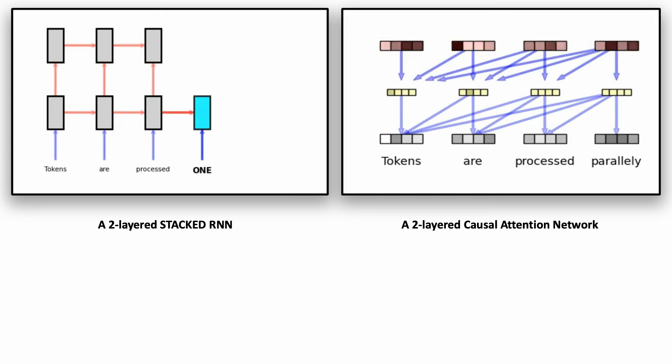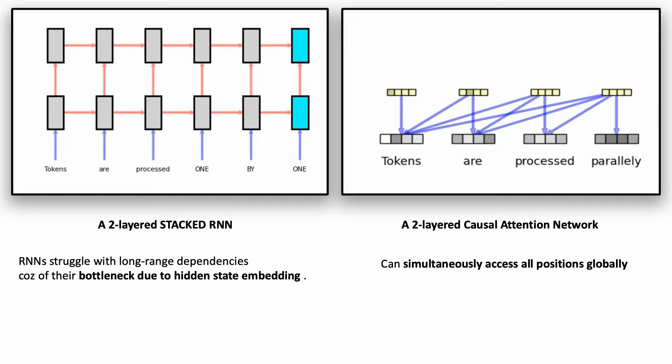If you're familiar with how decoder RNNs work in traditional encoder-decoder architectures, they are also trained to generate tokens one by one. What is the advantage of transformers then? Firstly, RNNs tend to face challenges with long-range dependencies — they bottle up all of the past sequence into one single hidden state embedding, creating an information bottleneck for long sequences. Self-attention and masked self-attention, on the contrary, can globally access any point in the sequence simultaneously without constraining information flow through any bottleneck, allowing transformers to learn long-term dependencies really well.